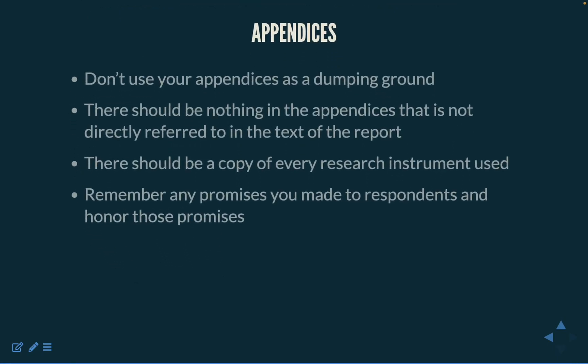It can be tempting to use your appendices as a dumping ground for everything you want to include but did not have room for — resist this temptation. There should be nothing in the appendices that is not directly referred to in the text of your report. At the very least, there should be a copy of every research instrument used, whether a questionnaire, an interview schedule, a focus group guide, or a context map for observation. What should not be there is a mountain of raw data. Remember any promises you made to respondents and honor those promises.